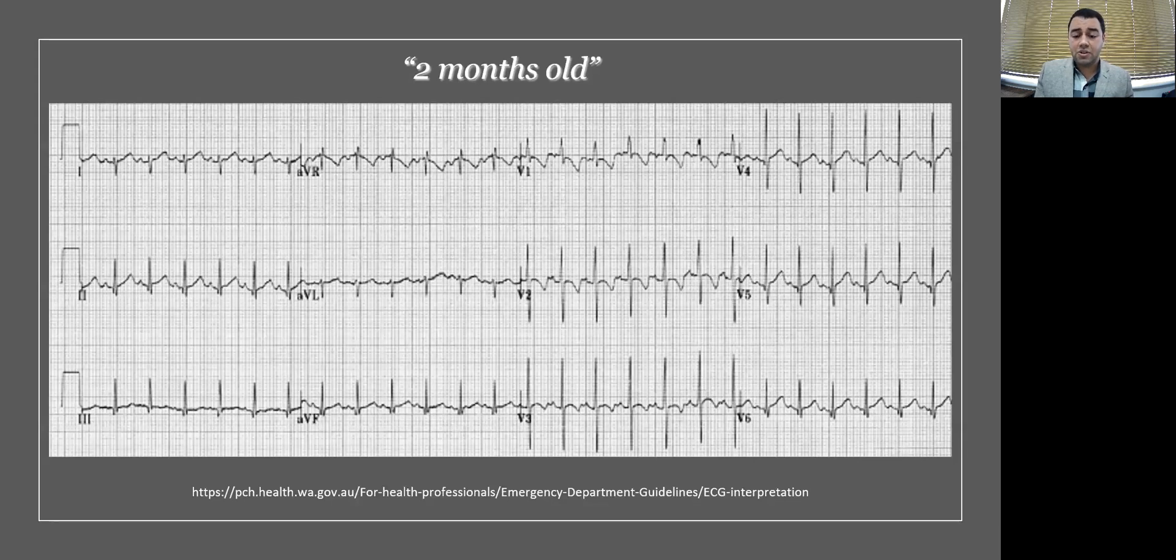If we go back to our ECG, actually, the right bundle, the right axis, the S1Q3, the sinus tachycardia and the T wave inversion that will make us think about PE are actually completely normal in that age group for a two month old.